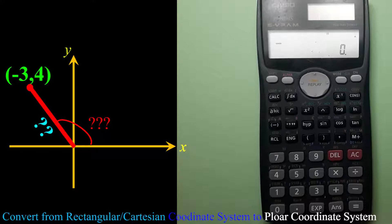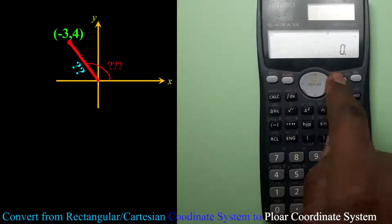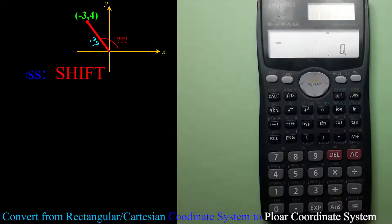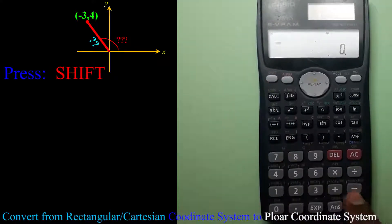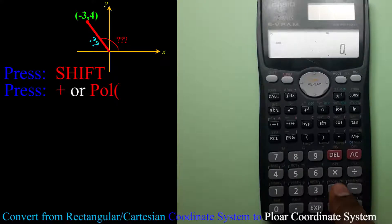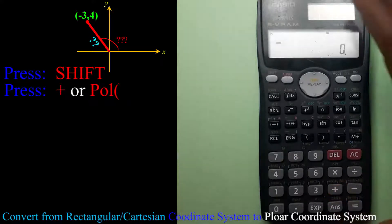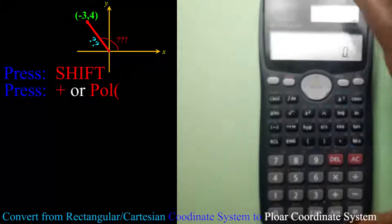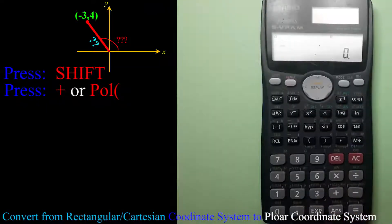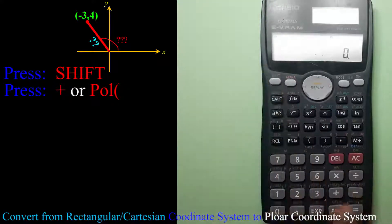Let me clear the memory, then I will say Shift. Now I will say the positive because it says here Polar, P-O-L, and the plus. So I will say Shift then plus, it says Polar.